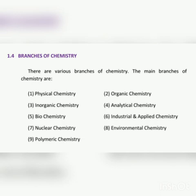The branches of chemistry are given on page number 5, topic number 1.1: number one, physical chemistry; number two, organic chemistry; number three, inorganic chemistry; number four, analytical chemistry; number five, biochemistry; number six, industrial chemistry; number seven, nuclear chemistry; number eight, environmental chemistry; and number nine, polymeric chemistry. Thanks and good luck.